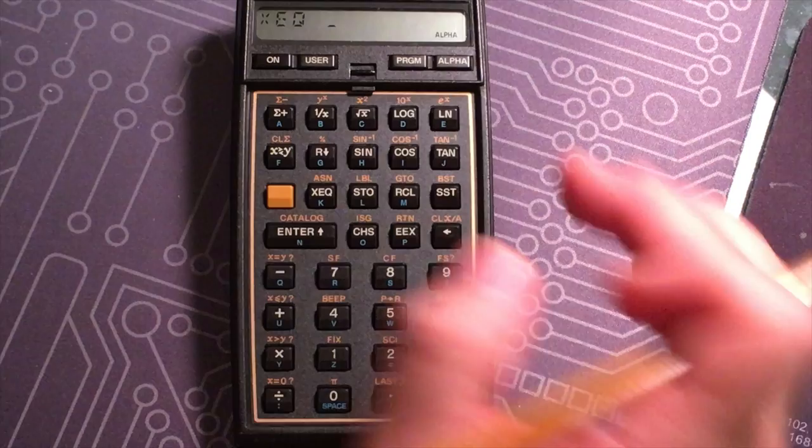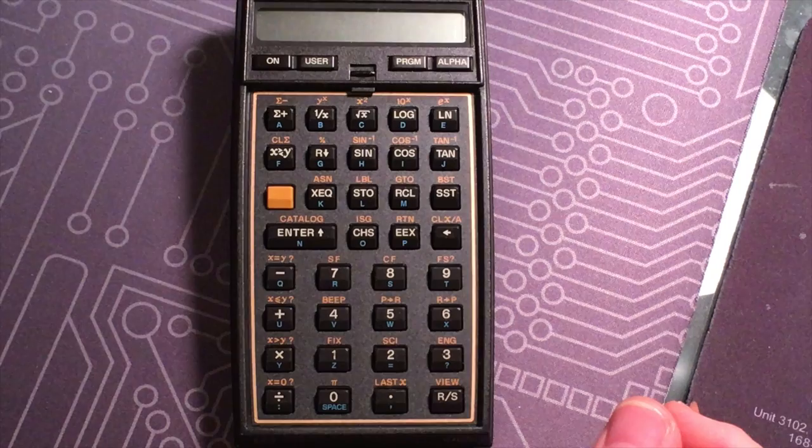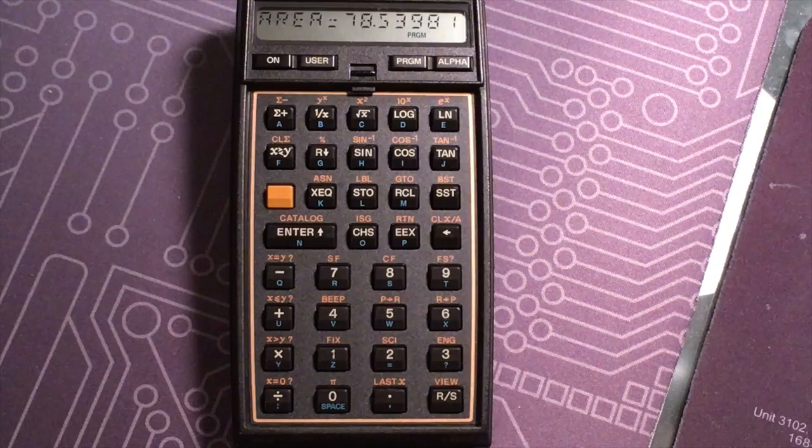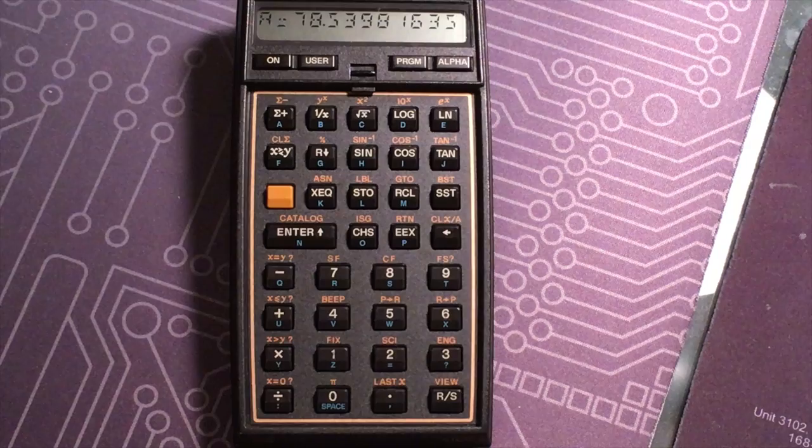Okay, get out of program mode. Let's run that again. This will do the area of a circle. It's going to prompt me for the radius, so let's do 5. I need to run stop, and then that calculates the area.